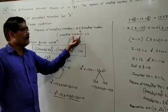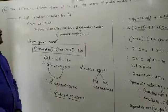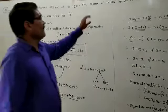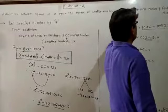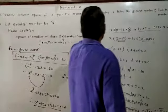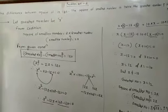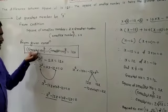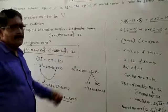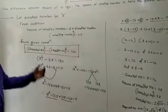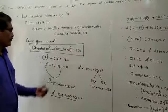One condition is given: the square of the smallest number is twice the greatest number. Before that, the other condition is given: the difference between the squares is 120. So, greatest number squared minus smallest number squared is equal to 120.